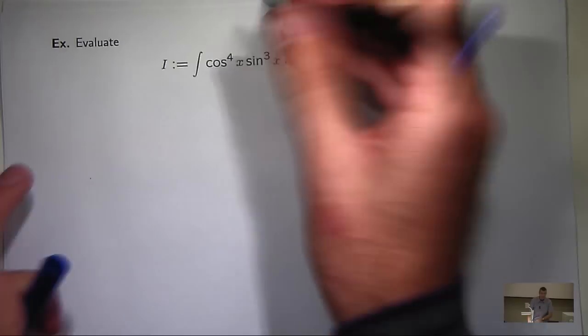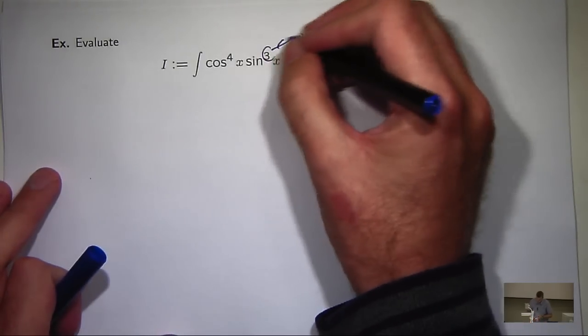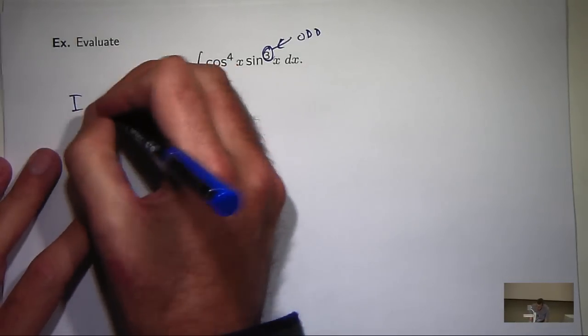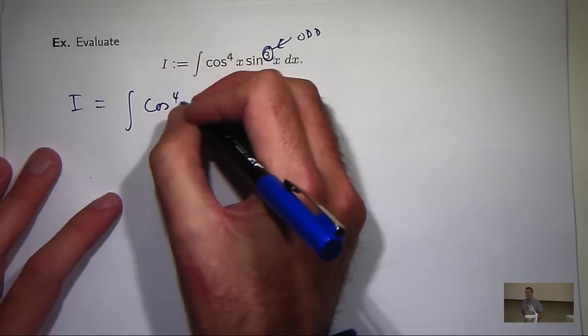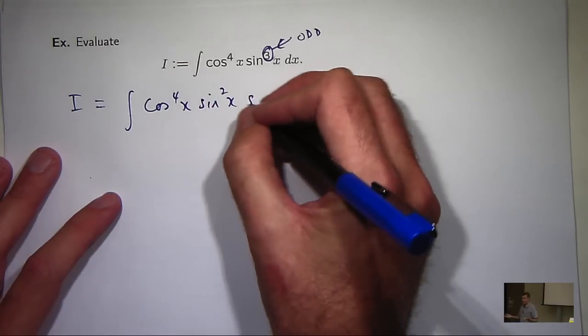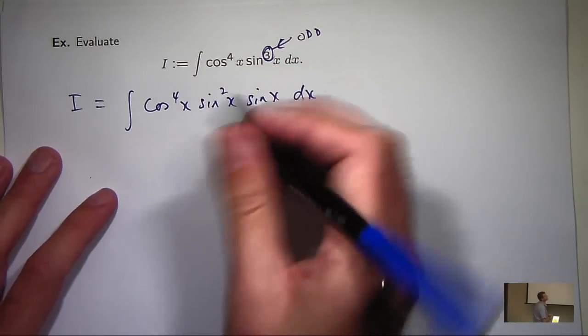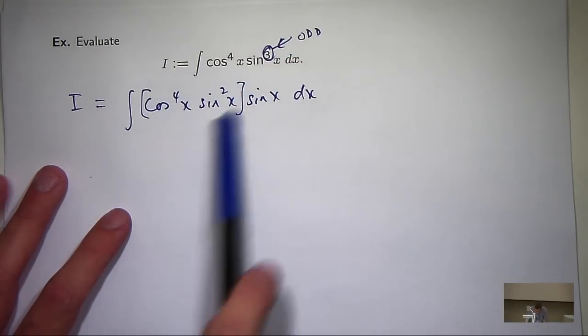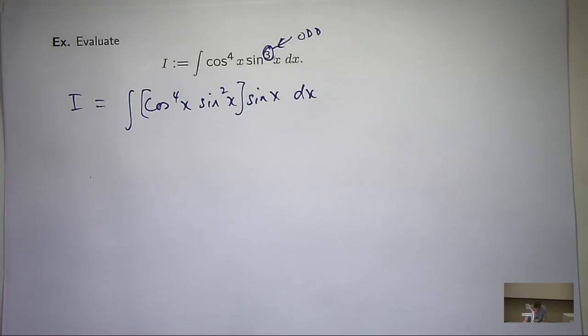So you can see in this example, I recognize that the odd power is connected with sine. So what I can do is just pull out a sine term, okay. And what I'm going to do is I'm going to leave that alone and work on this, okay. So I'm going to go to work on what's in those square brackets and try to turn it into powers of cosine.